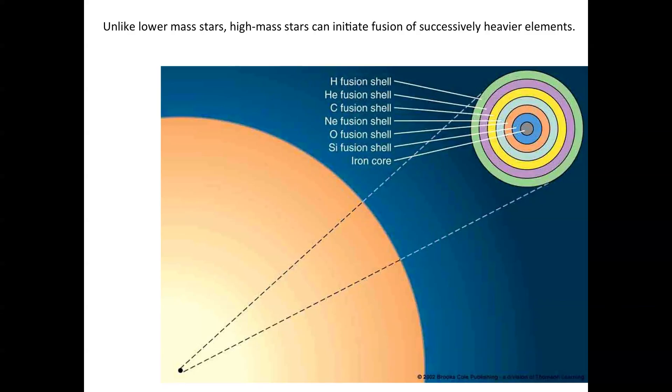Unlike the lower mass stars, high mass stars can initiate fusion of successively heavier elements. When you get to carbon in a low mass star, you're done. But as you go to high mass stars, you get this kind of onion skin set of layers where on the outside you have a hydrogen burning shell with a helium fusion shell inside and a carbon fusion shell inside that, and the carbon is making neon, the neon is making oxygen, the oxygen is making silicon, and the silicon is making iron at the very core.